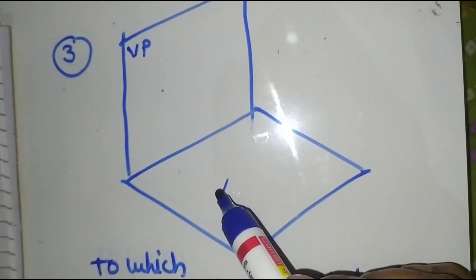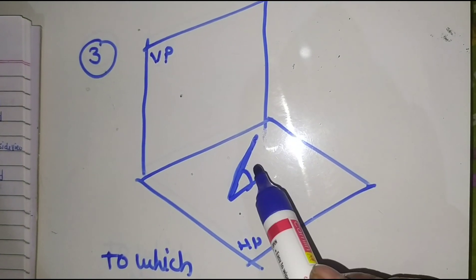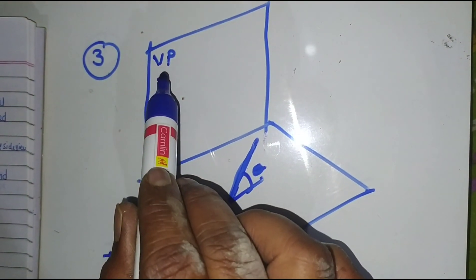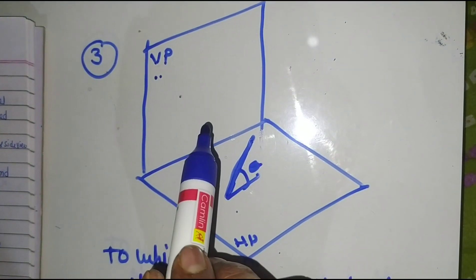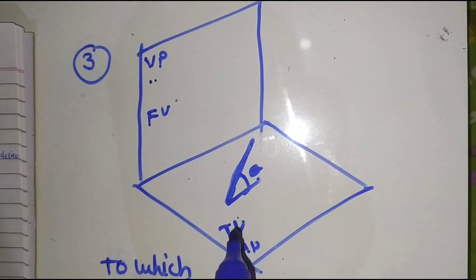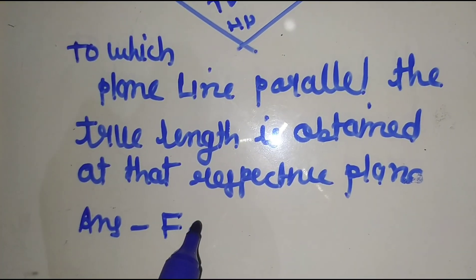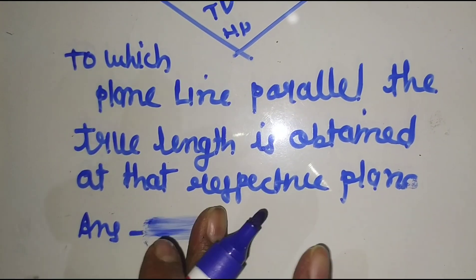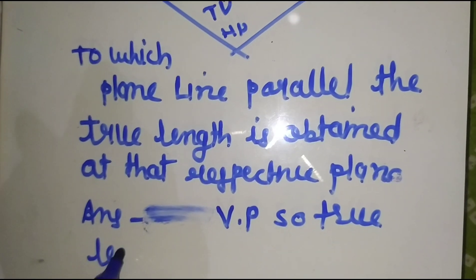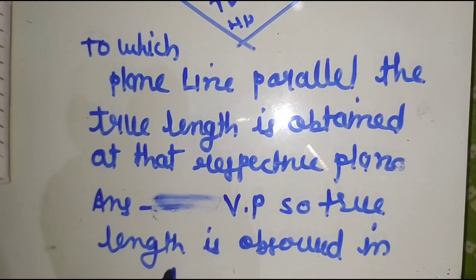Here the line is inclined to HP by some angle theta, but it is parallel to VP. So the true length is observed in the VP. In the VP we observe the front view, and in the HP we observe the top view. Since the line is parallel to VP, the answer will be front view.